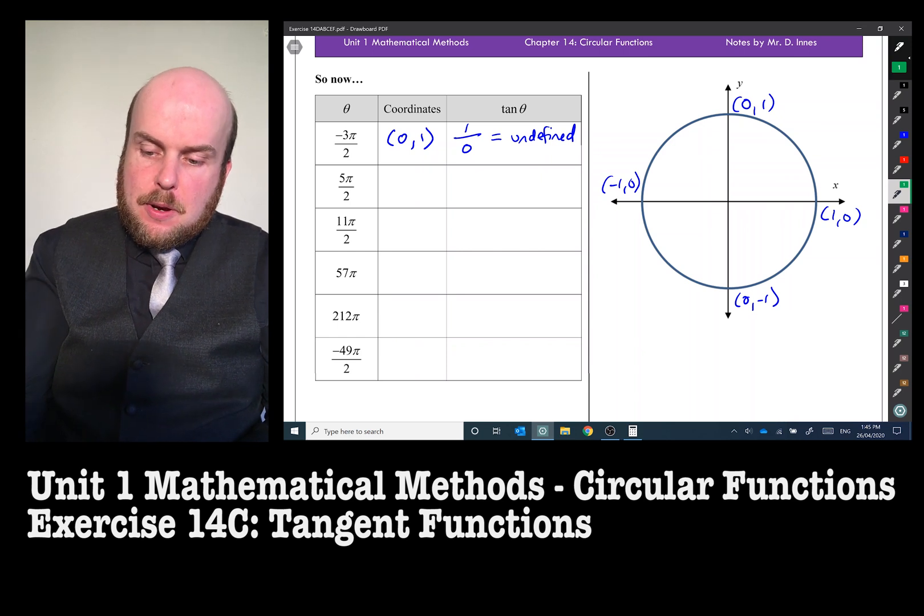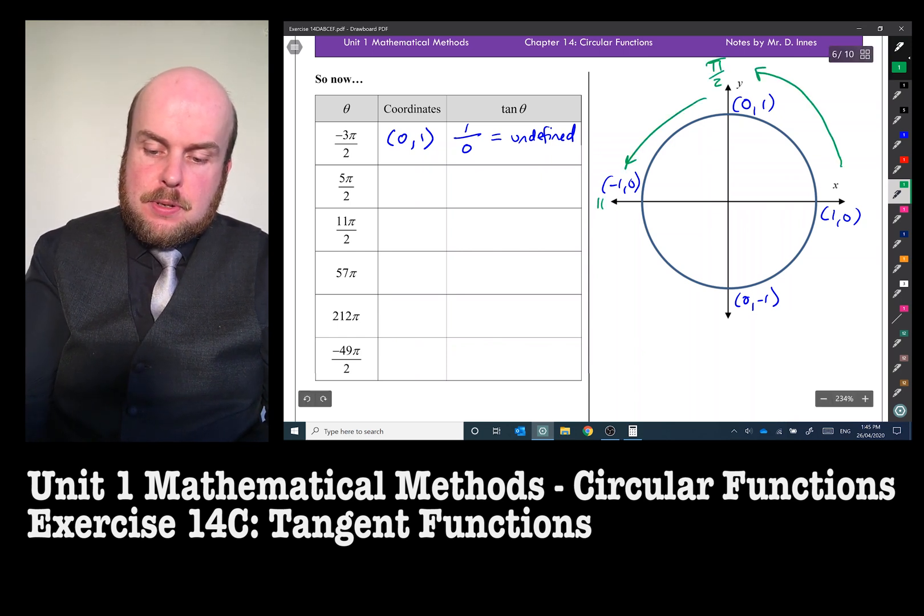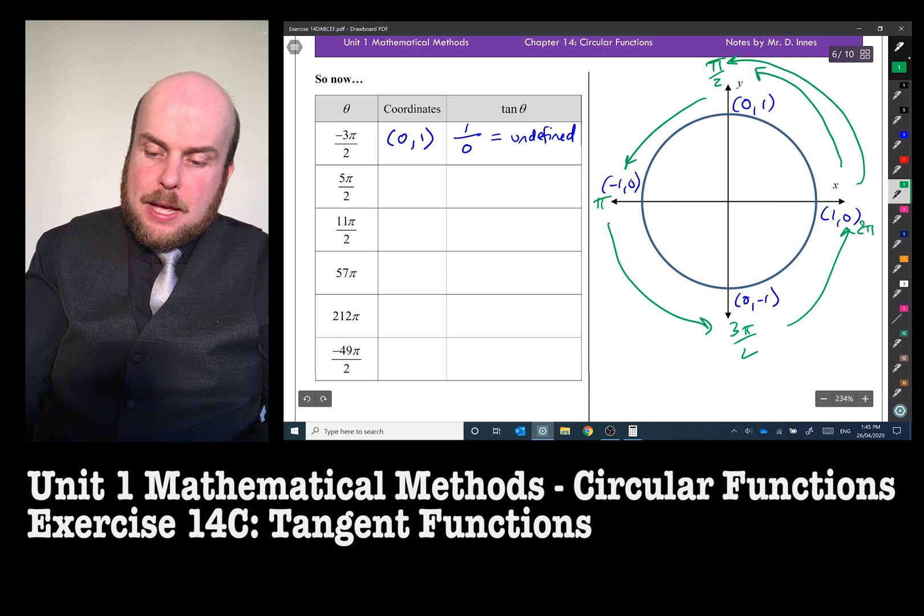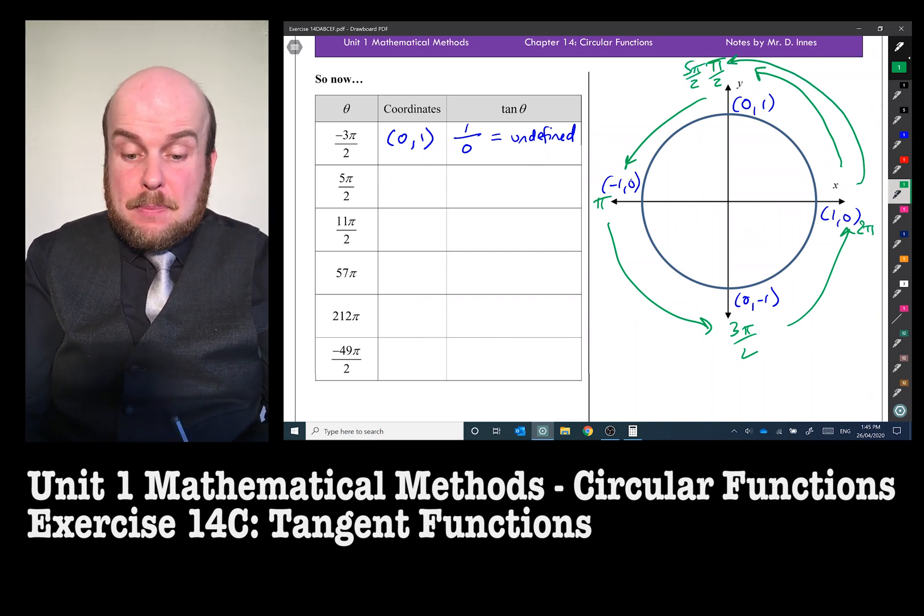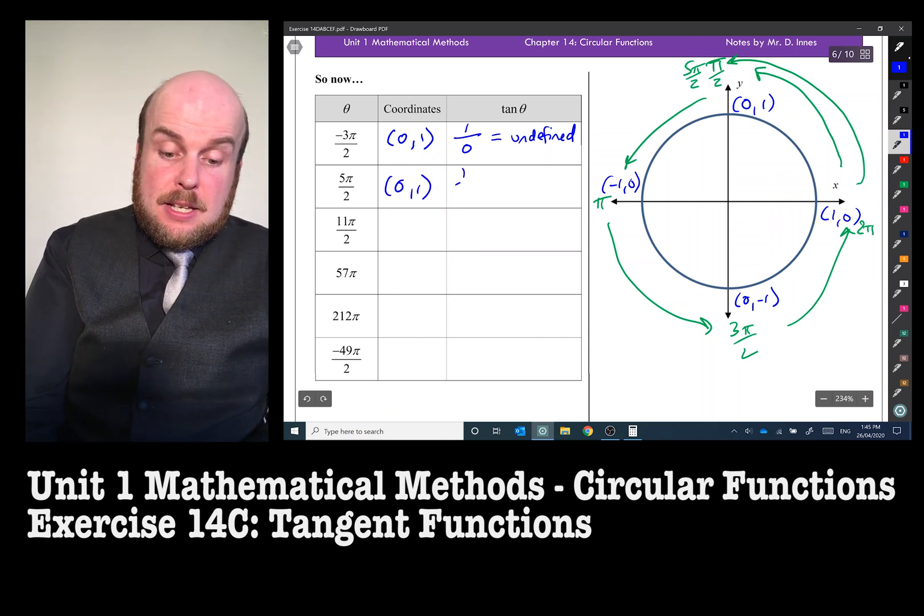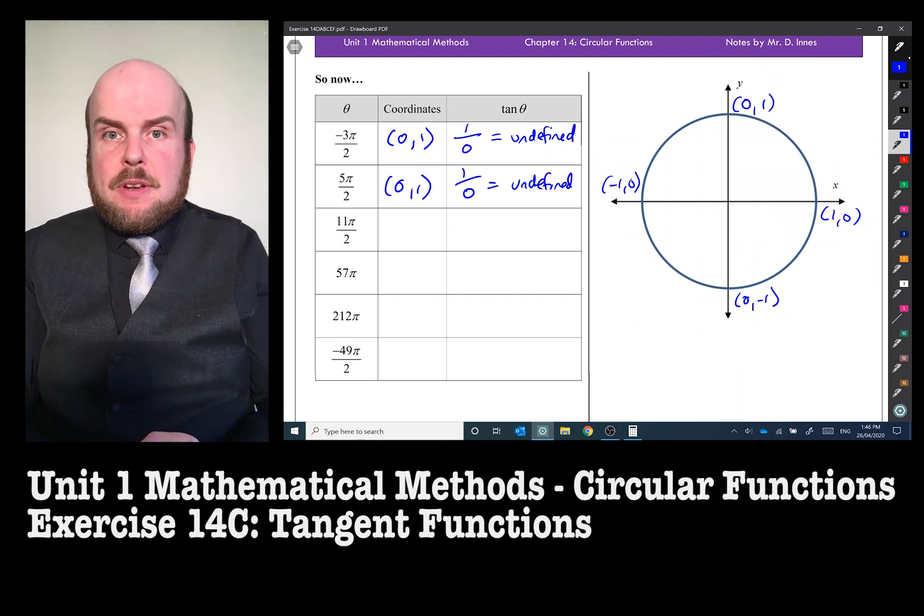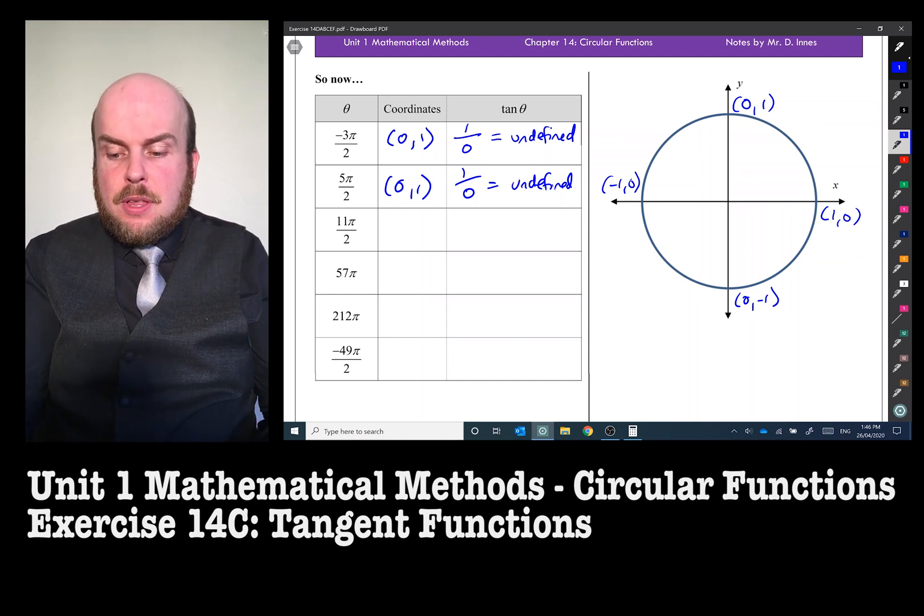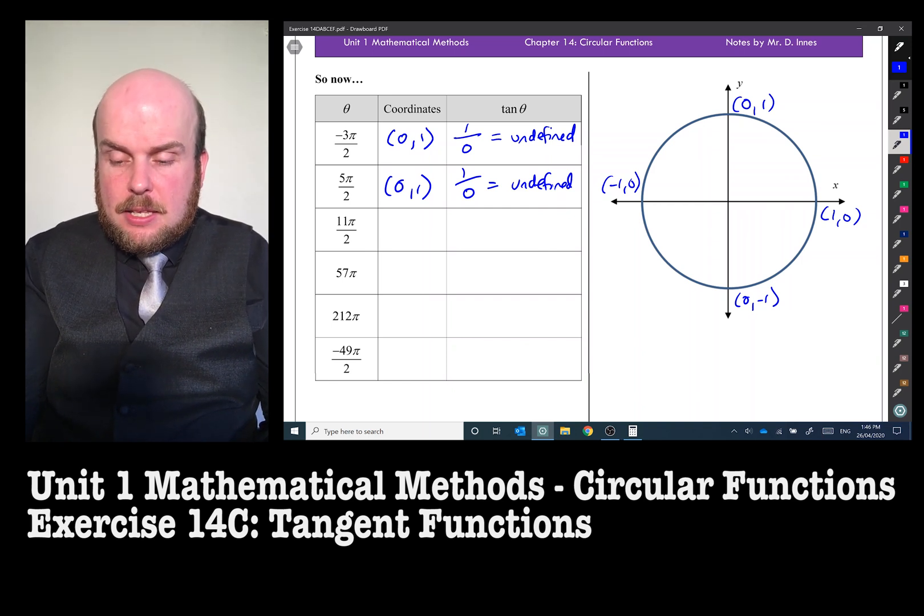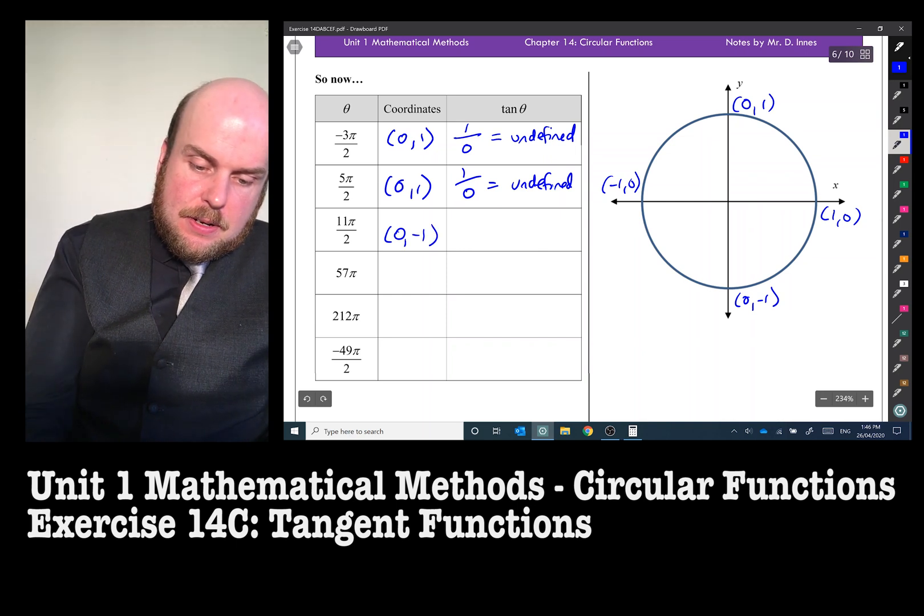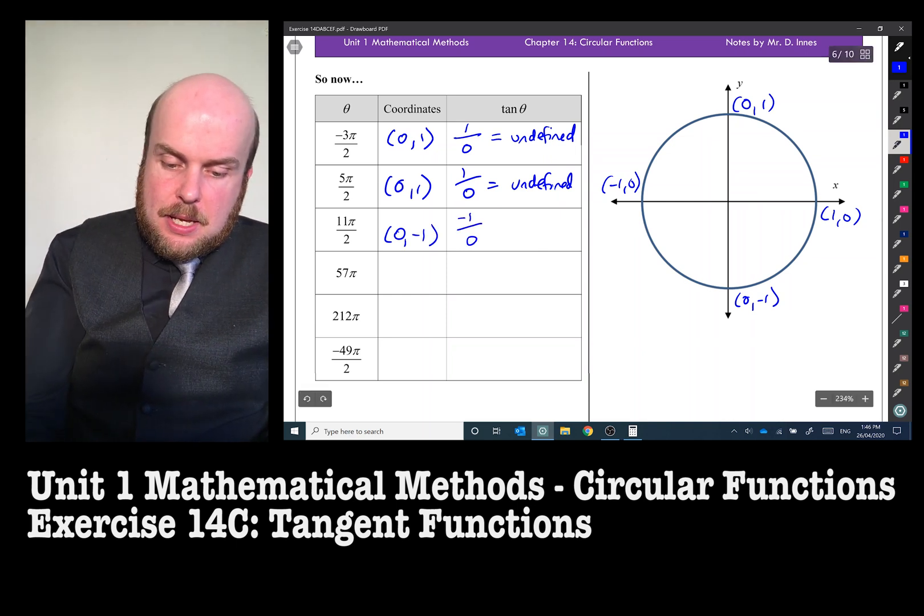5π/2. Well, if we go back, this is a positive. So there's π/2, π, 3π/2, 2π. Go back again. And this will be 5π/2. Well, we're back up here already once again. So that is also going to be undefined. 11π/2. Well, π/2, 3π/2, 5π/2, 7π/2, 9π/2, 11π/2 should be down here at the bottom. Because after all, 1, 3, 5, 7, 9, 11, it's going to bring us back down. So that's 0, negative 1. And that's going to be negative 1 divided by 0. Either way, it is still undefined.